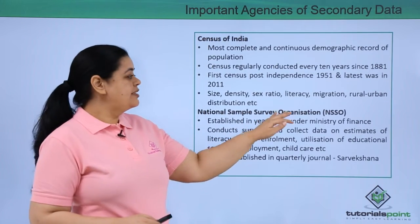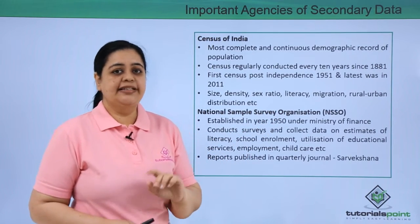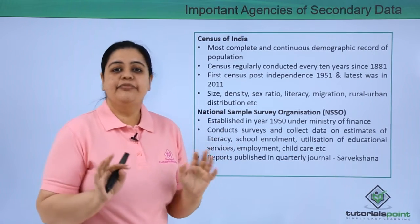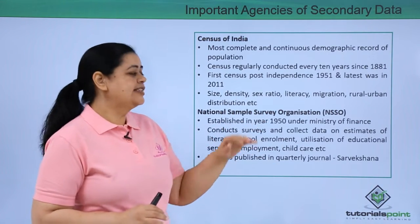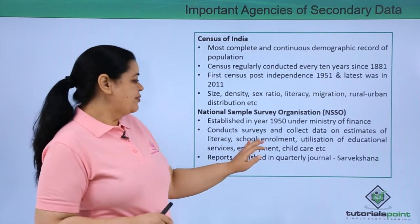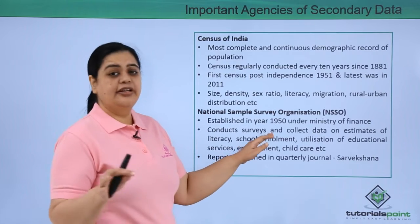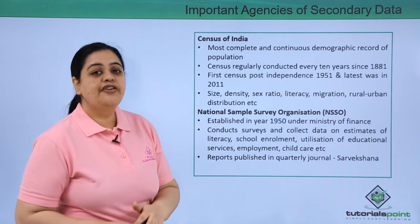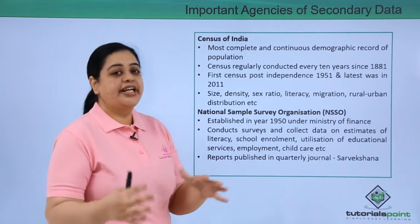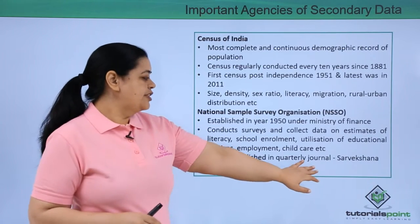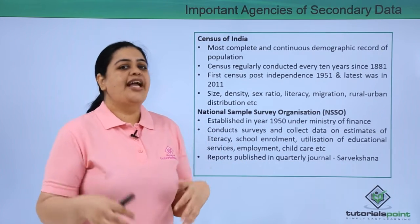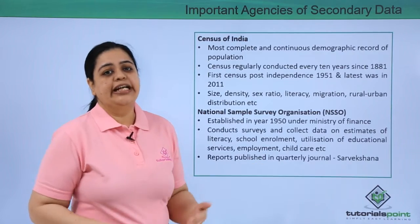Then comes the National Sample Survey Organization, known as NSSO. It was established in 1950 under the Ministry of Finance, which regulates this organization. It conducts surveys and collects data on estimates regarding literacy rate, school enrollments, utilization of educational facilities, services, employment, and child care. The reports are published in a quarterly journal known as Sarvekshana.